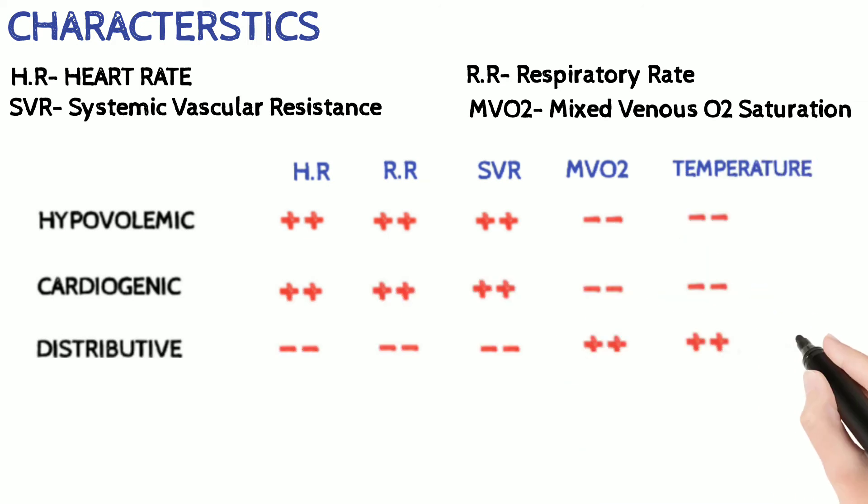As you can see, heart rate, respiratory rate, and SVR increase in both hypovolemic and cardiogenic shock but decrease in the distributive one, whereas MVO2 and temperature increase in distributive shock but decrease in the other two.